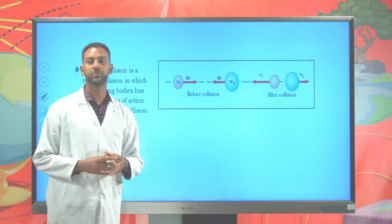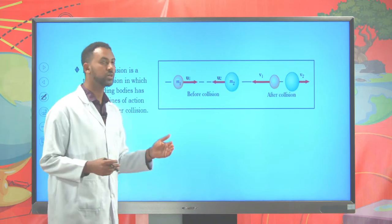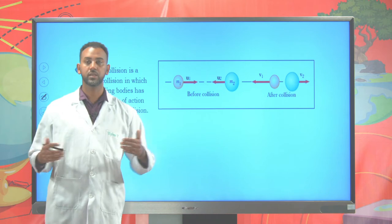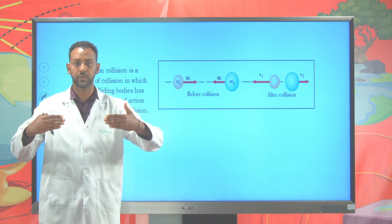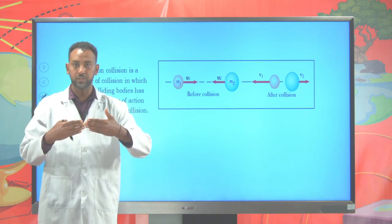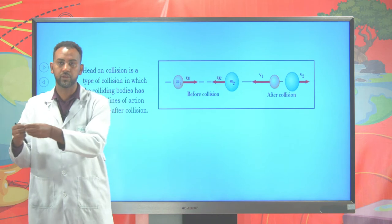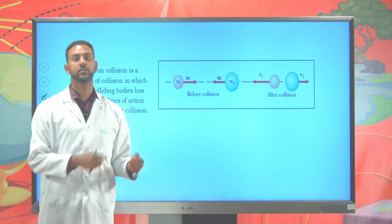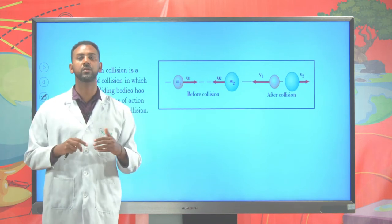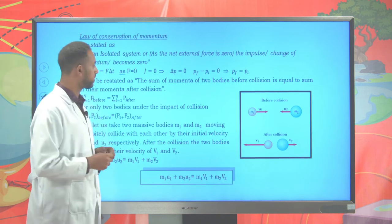The other type, and the most common, is head-on collision. Head-on collision is a collision in which the lines of action remain constant before and after collision. Suppose two objects are moving with different speeds in opposite directions and collide together. After collision, they might move along the same line of action — either bouncing back, or sticking together and moving in one direction. If the lines of action remain the same before and after collision, it is known as head-on collision.